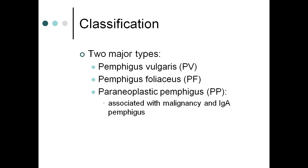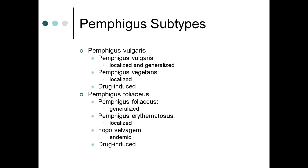Regarding classification, there are two major types: pemphigus vulgaris and pemphigus foliaceous, plus paraneoplastic pemphigus associated with underlying malignancies. Pemphigus vulgaris has localized and generalized subtypes, plus pemphigus vegetans and drug-induced forms. Pemphigus foliaceous subtypes include generalized, pemphigus erythematosus, fogo selvagem (endemic), and drug-induced.